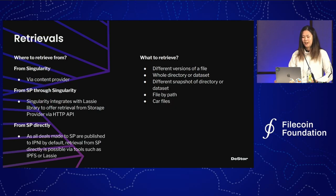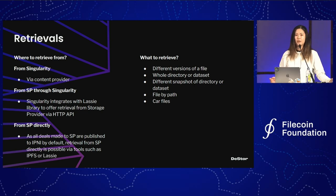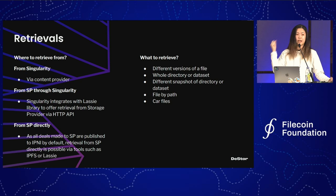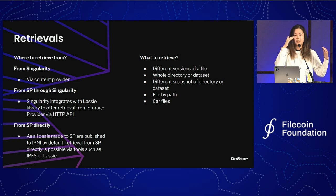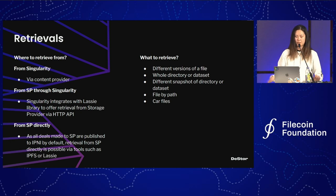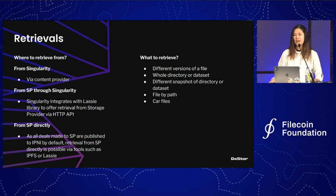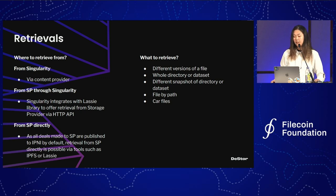Now, retrievals. Retrievals on Singularity are very flexible—there are many ways to serve them. You can serve from the Singularity content provider directly, or get it through Singularity to the SP, or get it from the SP directly if the SP is hosting an HTTP download endpoint—though that depends on the SP announcing that they have this CID in the IPNI. You can retrieve different versions of a file, a whole directory or dataset, different snapshots of a directory, files by path, and CAR files.